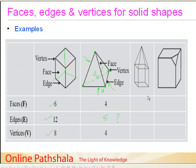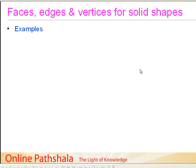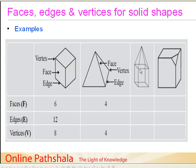Now let us find out the faces, edges and vertices for this next figure. Since there are four sides to the structure, there are four faces, the fifth one is on the bottom, plus we have another four here — so we will have nine faces in total. For edges, we have four standing parallel, four going towards the upper side — that is eight — plus another four, making twelve, plus four more, giving us sixteen edges.